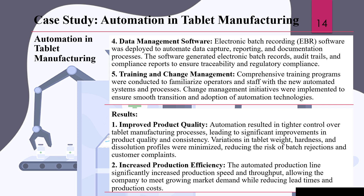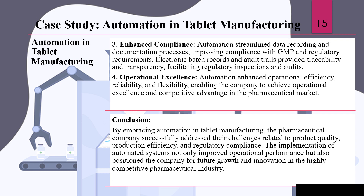The results achieved include: first, improved product quality — automation resulted in significant improvements in product quality and consistency, for example variations in tablet weight, hardness, and dissolution were minimized. Second, increased production efficiency — the automated production line significantly increased production speeds and throughput, allowing the company to meet growing market demands. Third, enhanced compliance — automated and streamlined data recording improved compliance with GMP and regulatory requirements. Fourth, operational excellence — automation enhanced operational efficiency, reliability, and flexibility, enabling the company to achieve competitive advantage in the pharmaceutical industry.